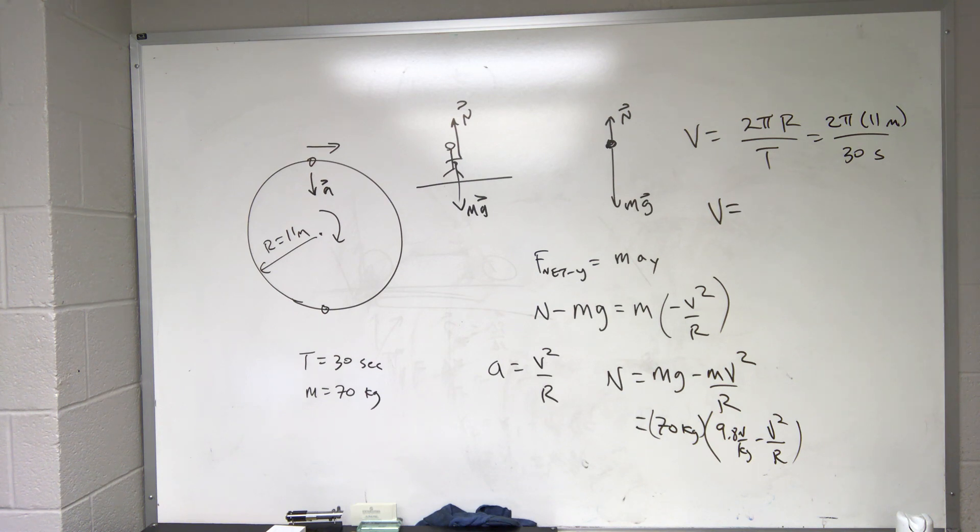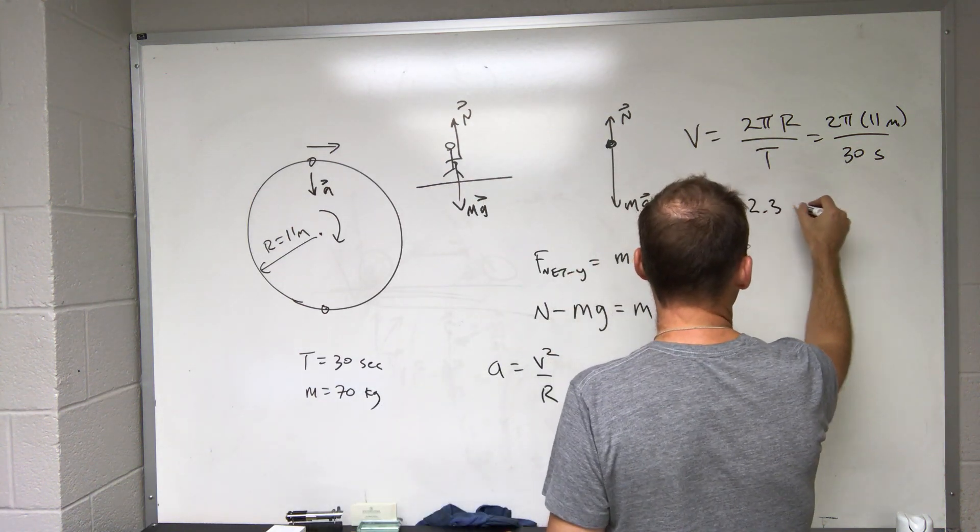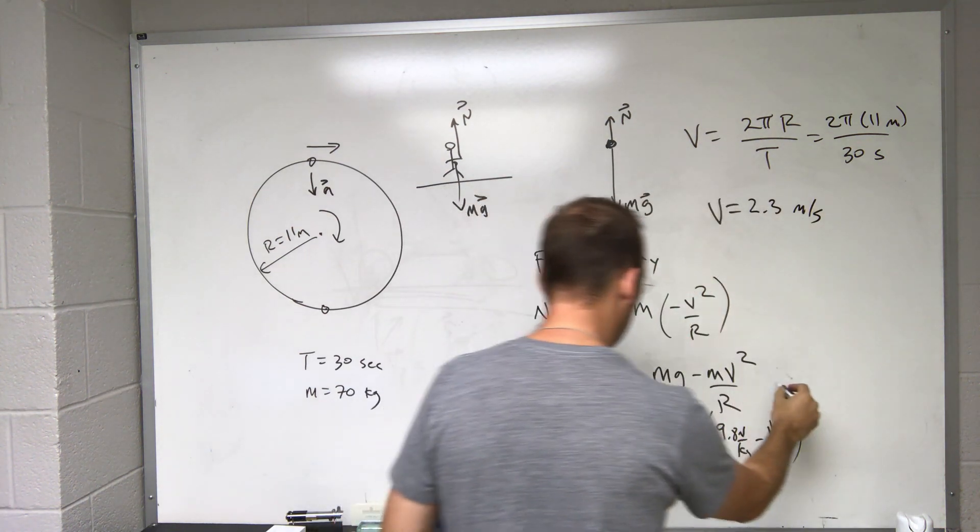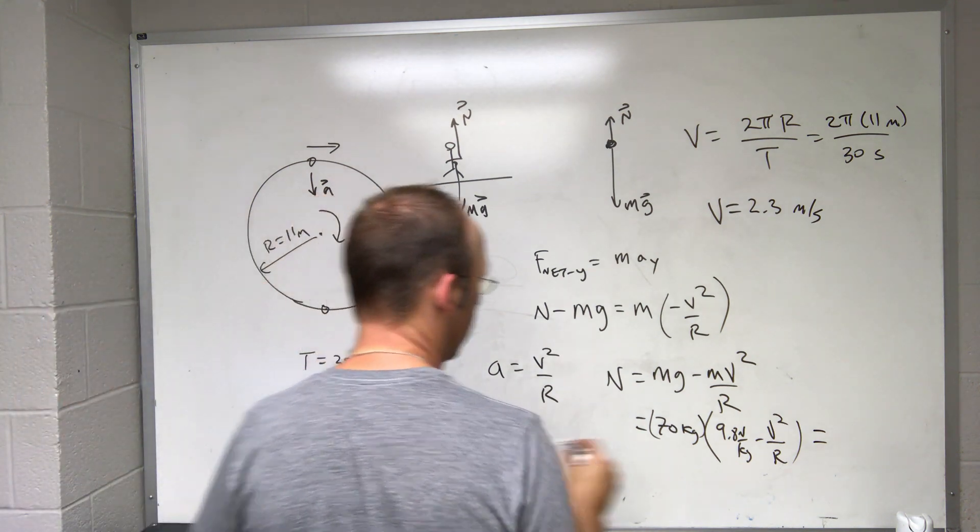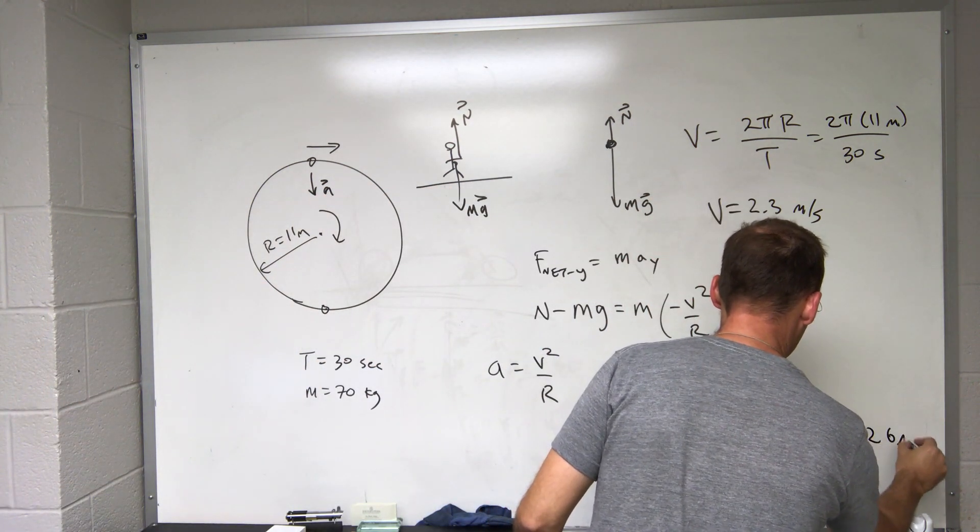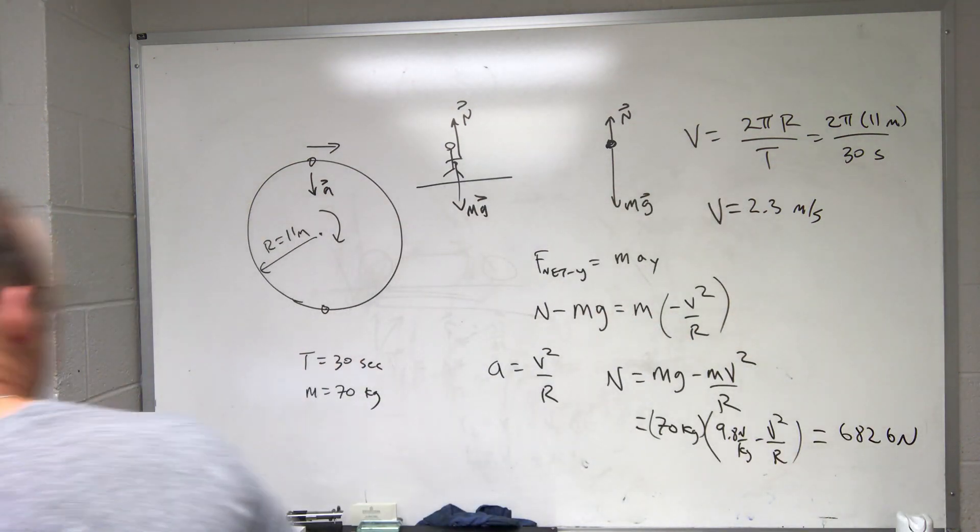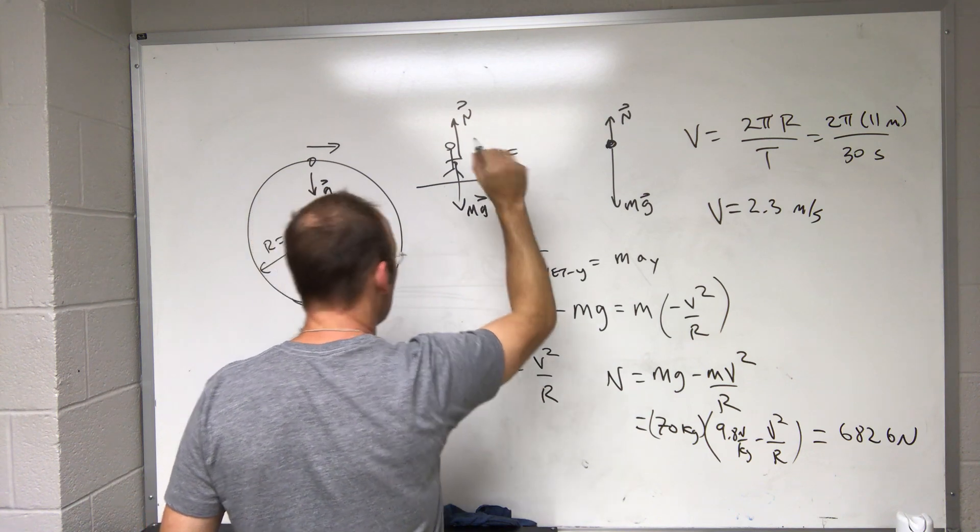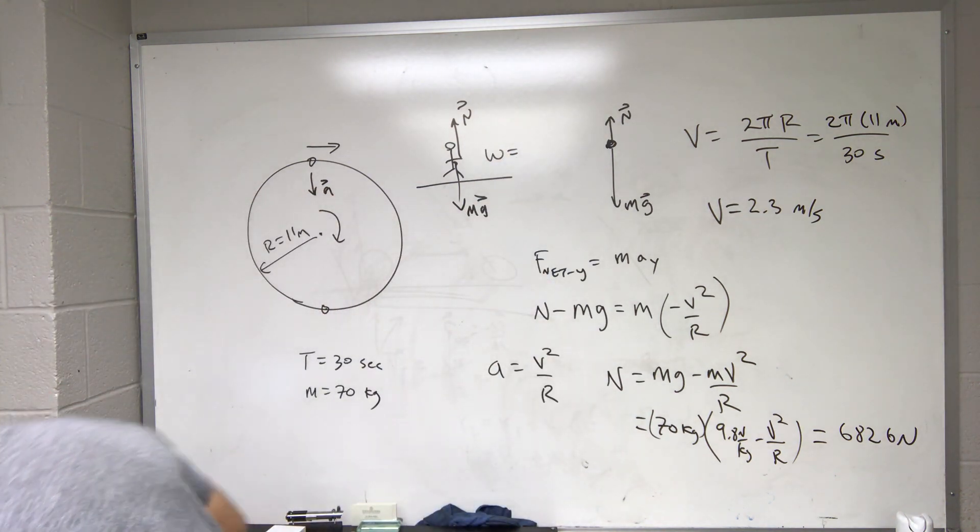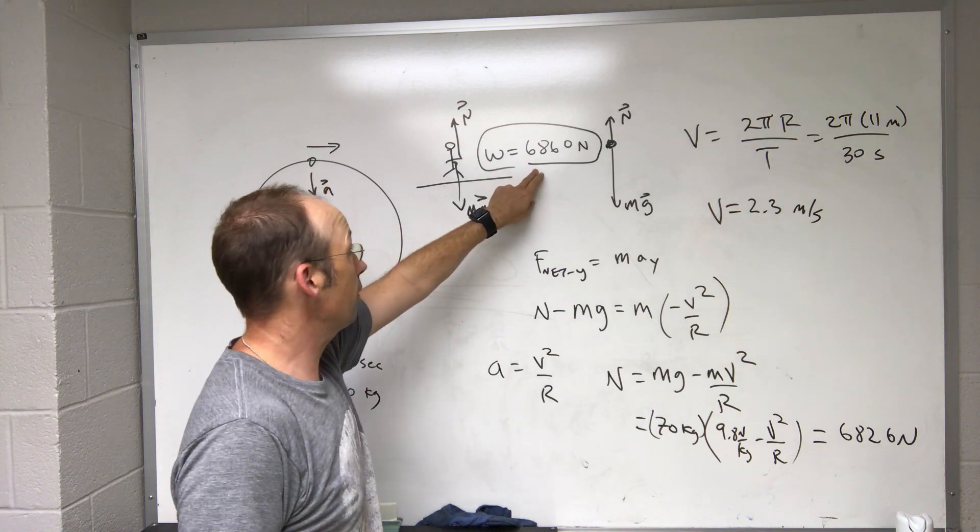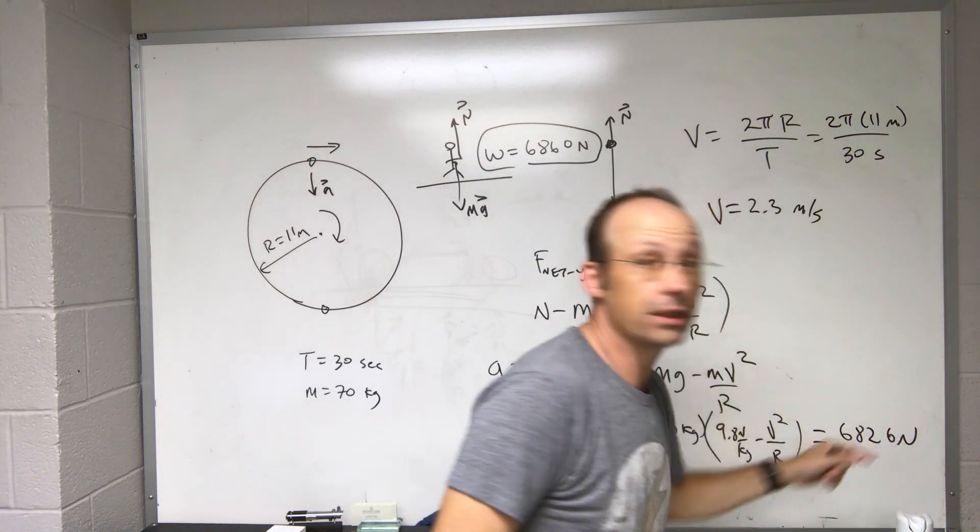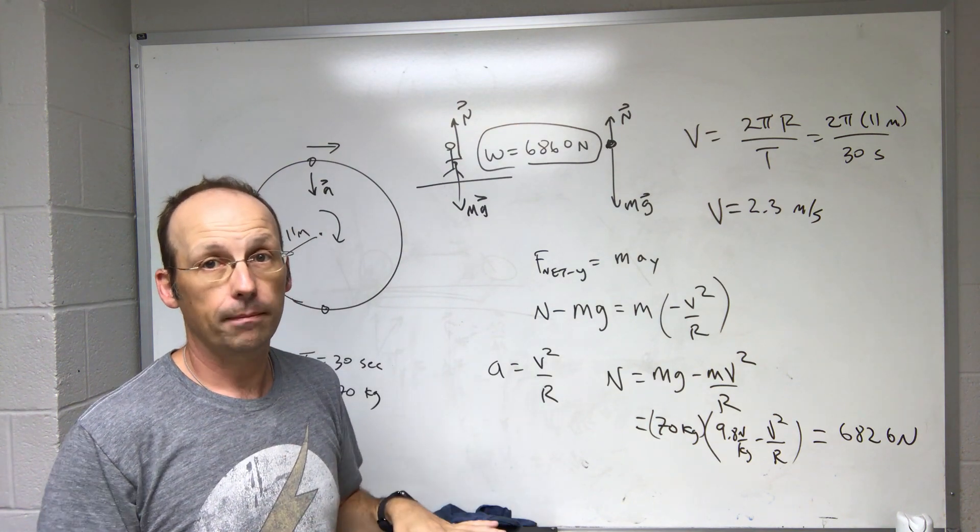r equals 11. g equals 9.8. m equals 70. v equals 2 times π times r divided by 30 seconds. So now I can just put all my things in. I get n equals m times g minus v² divided by r. The velocity is 2.3. And if I put that in, I get n equals 682.6 Newtons. And just as a comparison, the weight of a person just staying there with the same mass, the weight would be mg and that's 686.0. So the weight is 686.0. The apparent weight is 682.6.